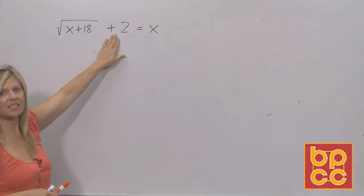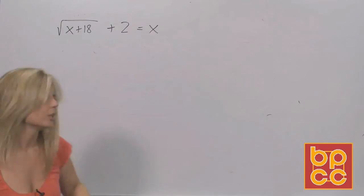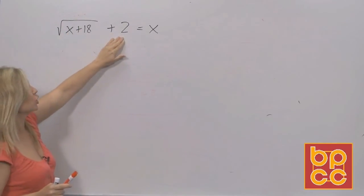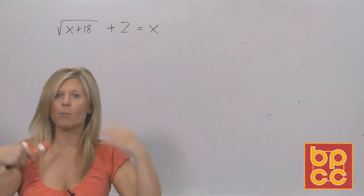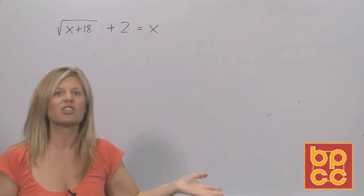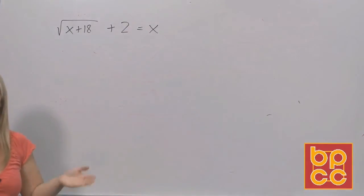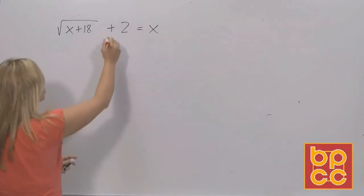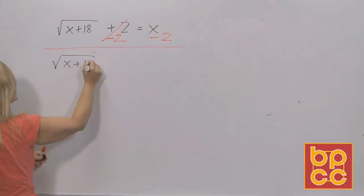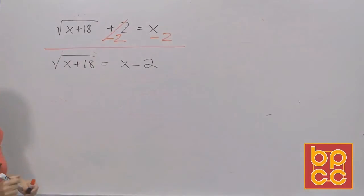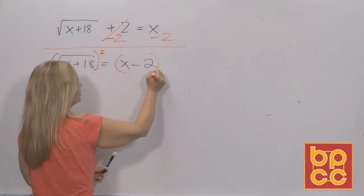There's a plus 2 on the left side that is not inside the square root symbol. The rule is: to solve a radical equation you have to isolate the root, which means this 2 has got to move. Think of it like firemen telling you to cross the street before they put out the fire. So we move the 2 and get square root of x plus 18 equals x minus 2. Now we can't move anything else, so to get rid of the square root we do the opposite — we square both sides.